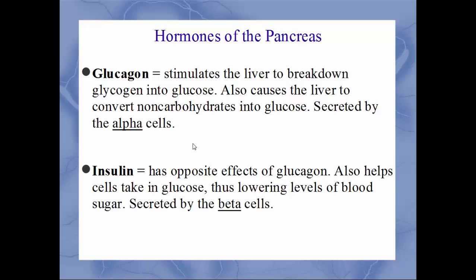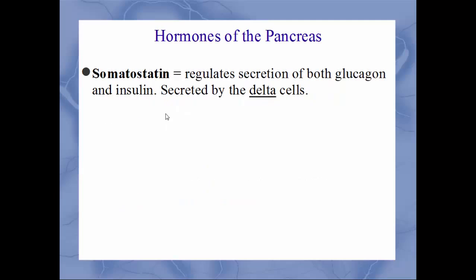The pancreatic hormones and their source cells: glucagon, secreted by alpha cells, stimulates the liver to break down stored glycogen back into glucose, raising blood sugar. Insulin, secreted by beta cells, has the opposite effect — it lowers blood sugar. Somatostatin, secreted by delta cells, regulates the secretions of both glucagon and insulin to prevent either from getting out of hand.